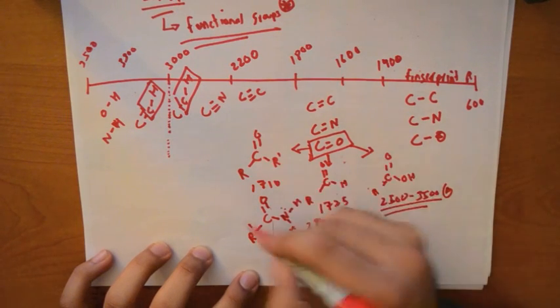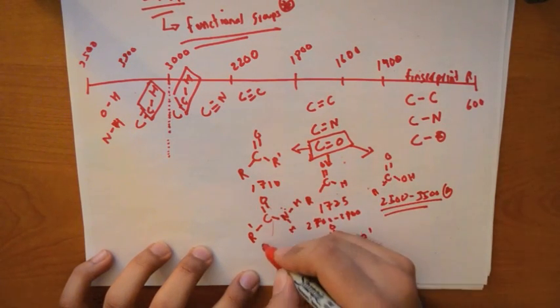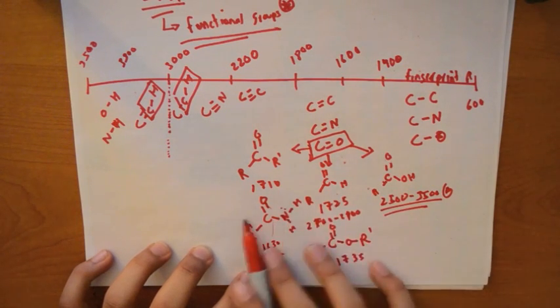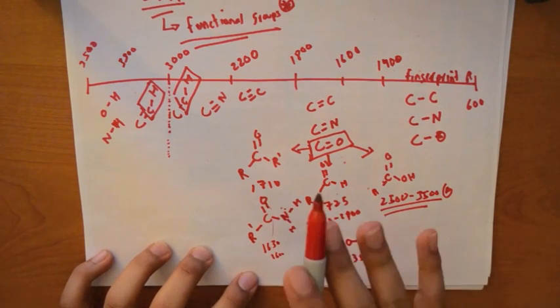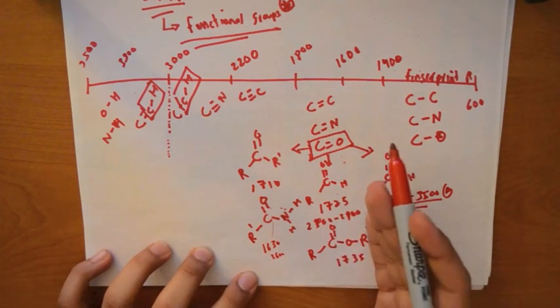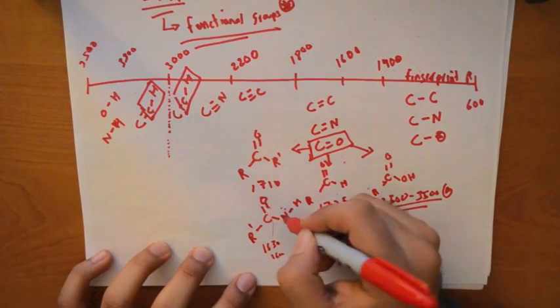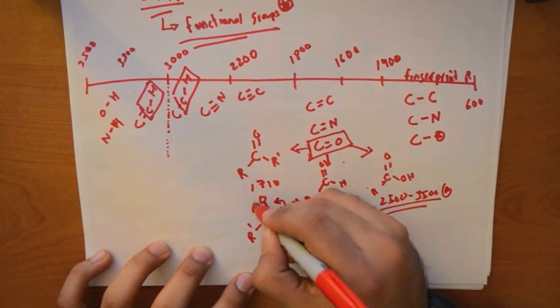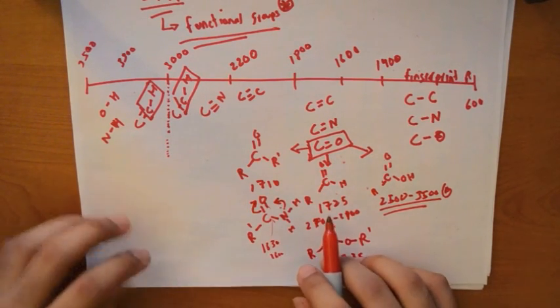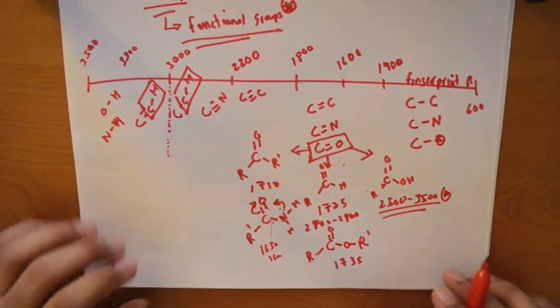So if it's lower, why is it lower now? It's around 1630 to 1660. It's because there is conjugation. Remember this, this is an important point. Conjugation lowers your frequency. So you can see that these electrons can go here. These electrons can go there as a single double bond of formation there. And there could be resonance structures possibilities for that.